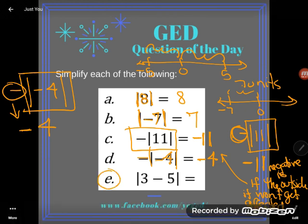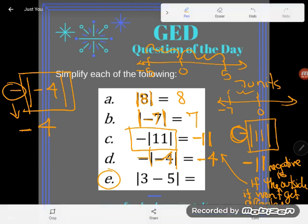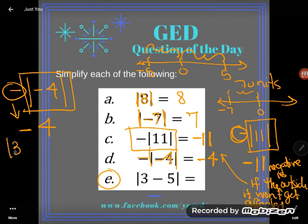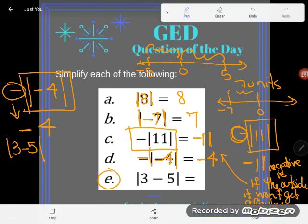Now e is very similar to something you might see on the GED. It requires a little bit of knowledge again of the order of operations but we can totally do this. So I'm looking for the absolute value of the difference between three and five or the absolute value of three minus five.